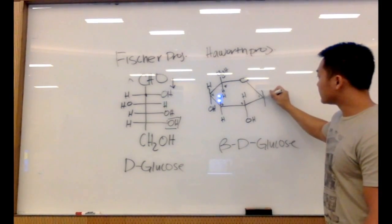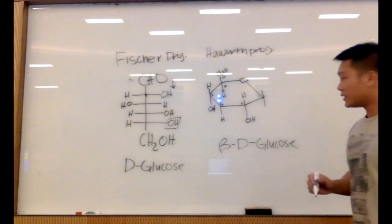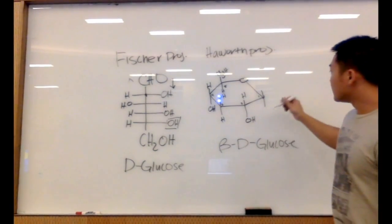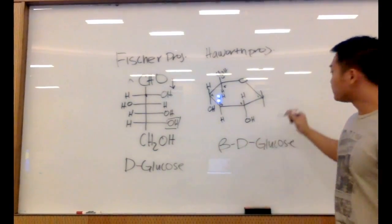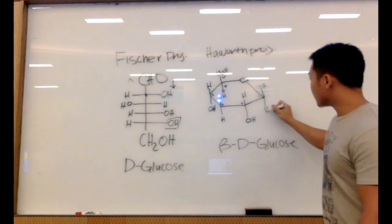For my anomeric carbon, this will determine if it's beta or alpha-D-glucose. And since we're going to start off with beta, we're going to put the hydroxy group going up and my hydrogen going down.